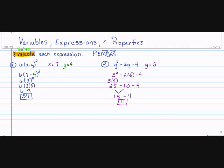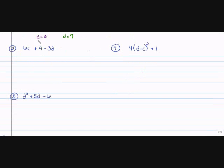Let's go ahead and do another one. In all these three problems, they tell us that C equals 3, and D equals 7. So anywhere I see a C, I'm going to substitute a 3. And anywhere I see a D, I'm going to substitute a 7. My first problem, 6C plus 4 minus 3 times D.